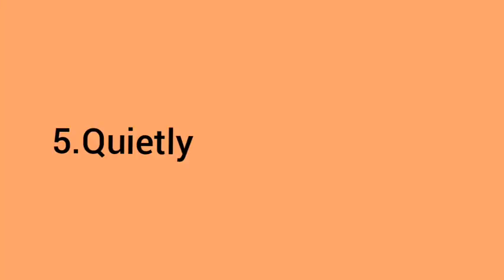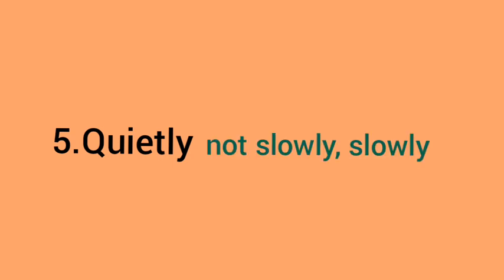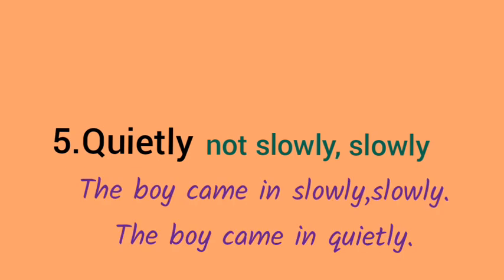Number 5 is 'quietly' — not 'slowly slowly.' You don't use 'slowly slowly' in this context. For example: 'The boy came in quietly' is the correct sentence. In both sentences shown, the second sentence which uses 'quietly' is correct.